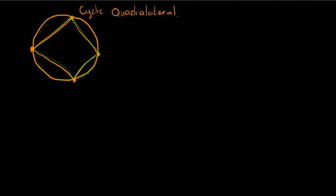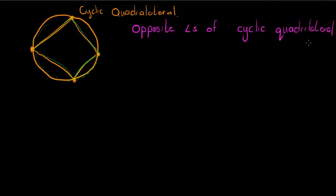The opposite angles of a cyclic quadrilateral adds up to 180 degrees.